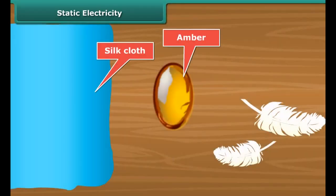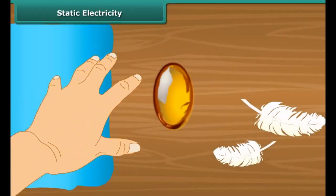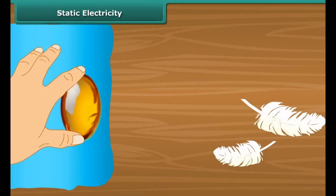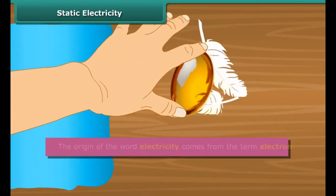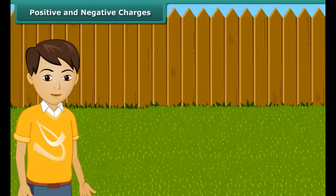Thales found that amber attracted tiny feathers after it was rubbed with silk cloth. This was due to static electricity. The origin of the word electricity comes from the term electron.